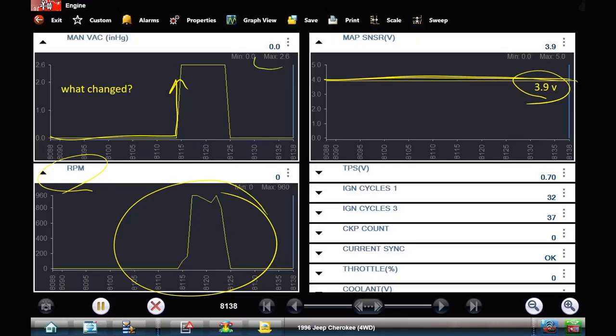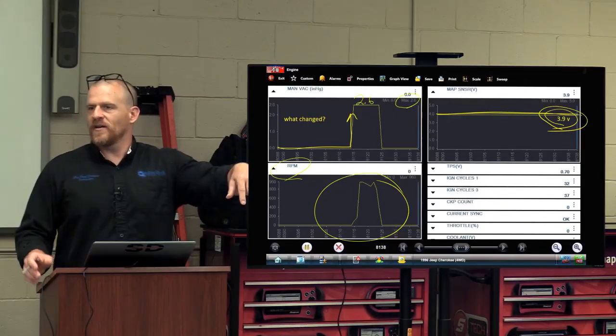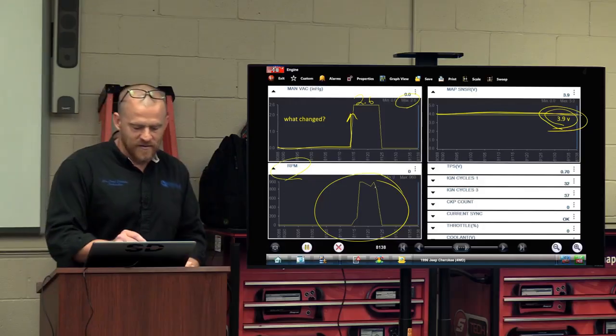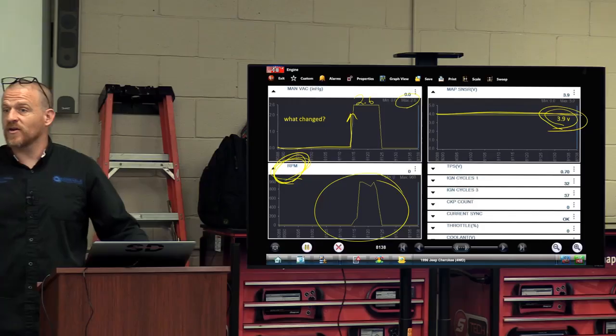It updated to max at 2.6. So 2.6 inches of vacuum. 3.9 volts is equivalent to 2.6 inches of vacuum. And what did the computer need for that to update? What is this? RPM. I just needed to crank it over or start the car.